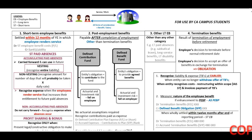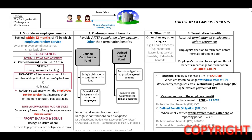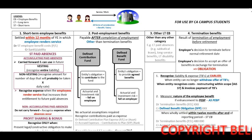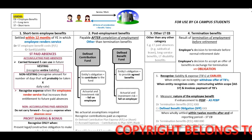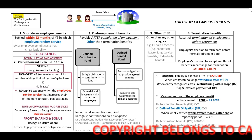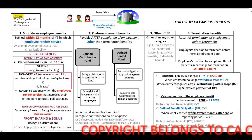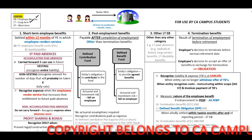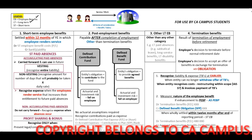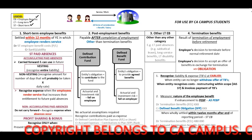Welcome to our revision lecture on IAS 19 Employee Benefits. Before we start, I want to discuss the legend included on your screen. When I use the abbreviation EB, this stands for employee benefits; LT for long-term and ST for short-term.